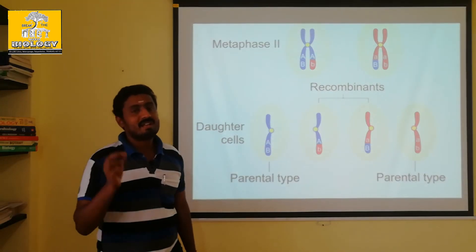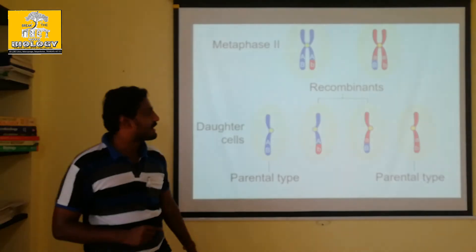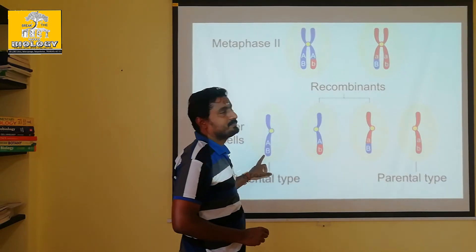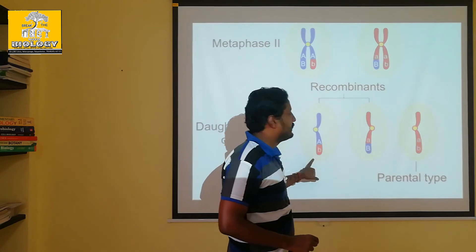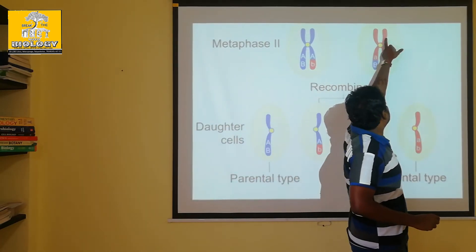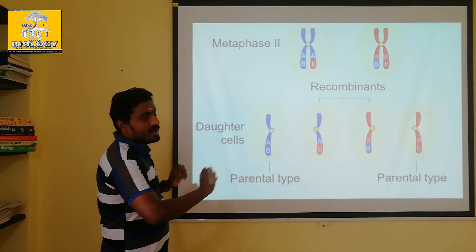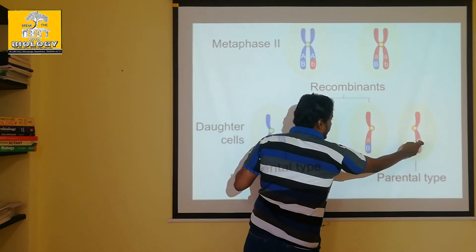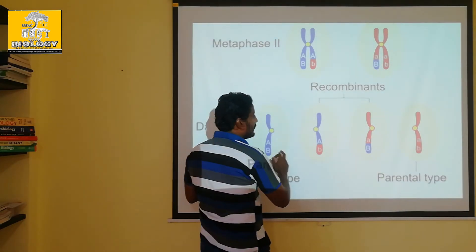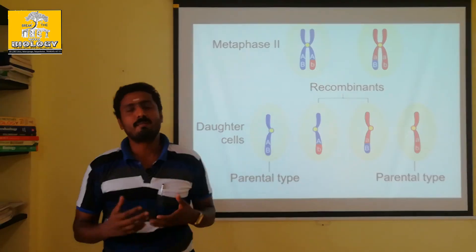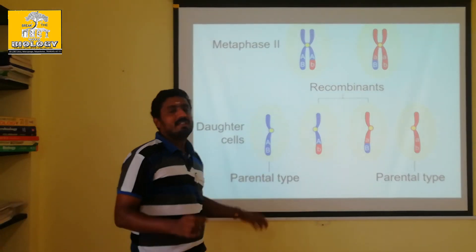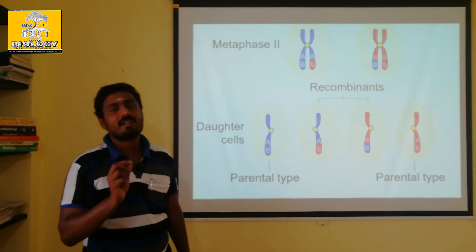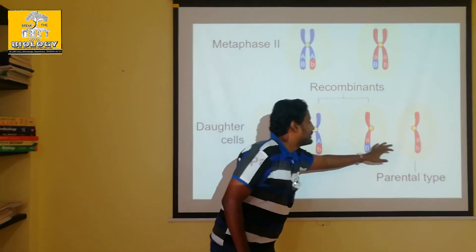You can start with the linkage. That is the end — parental character is how to form. This is the parental type. This one is the recombination character. This is parental type. The parental character will be more in the next generation — it has the linked genes more. Crossing over percentage is very much less in these types.